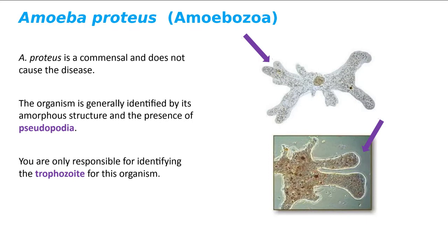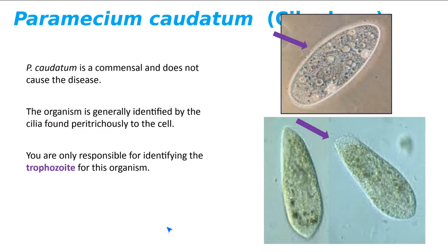This is Paramecium caudatum. It's also a commensal — it doesn't cause infection. It's oval in shape and has all of these very fine cilia surrounding the entire structure. It's a classic example of a ciliate.